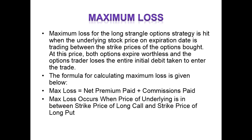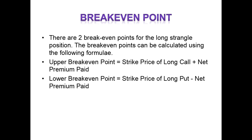Maximum loss for the long straddle option strategy is hit when the underlying stock price on expiration date is trading between the strike prices of the options bought. At this price, both options expire worthless and the options trader loses the entire initial debit taken to enter the trade. The formula for calculating maximum loss is: net premium paid plus commissions paid. Maximum loss occurs when the price of the underlying is between the strike price of the long call and the strike price of the long put.